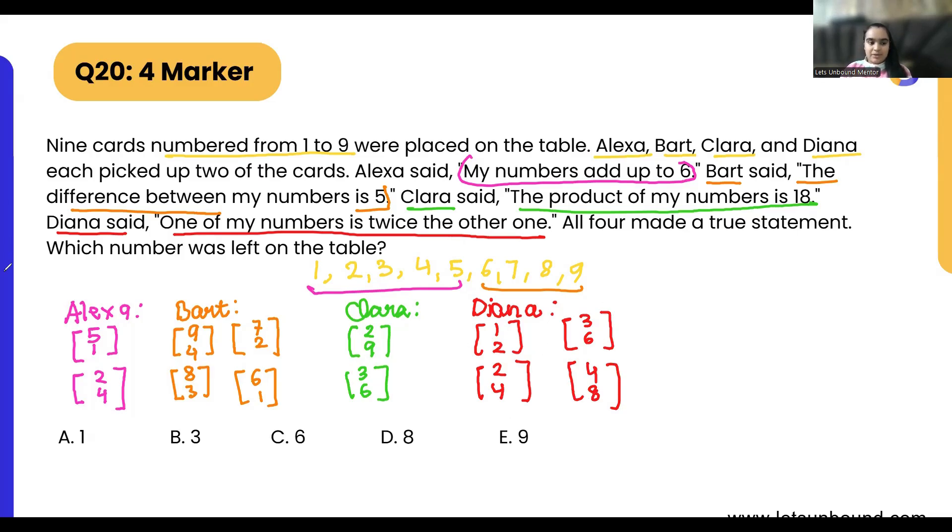Now all four made a true statement. Which number was left on the table? Let's start with the hit and try method. Let's assume Alexa is having five and one, these two numbers. So that means all the other options which have numbers one and five, we will cross out. So these two numbers are crossed out now. Now let's say Bart is using, or let's say Clara, because Clara is having only two sets of numbers now. Two and nine, or three and six.